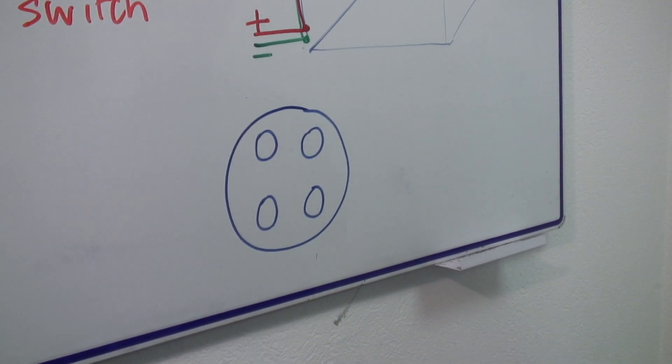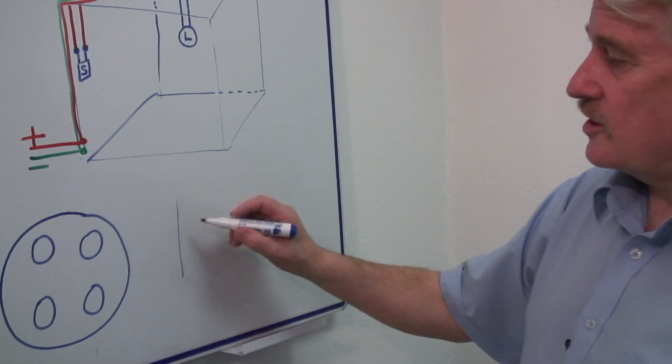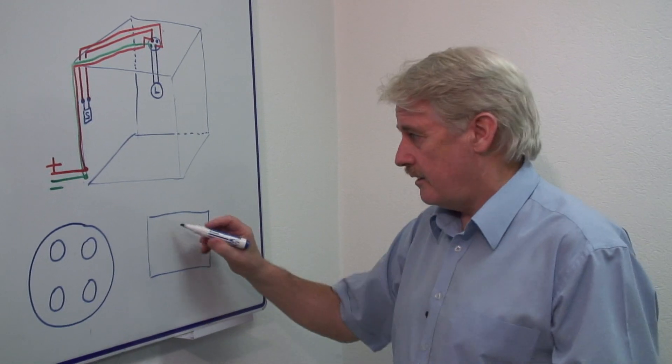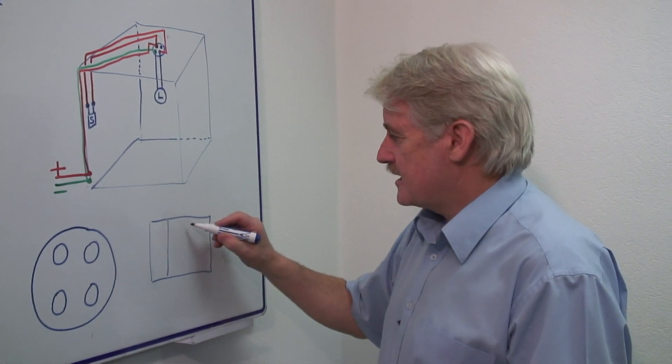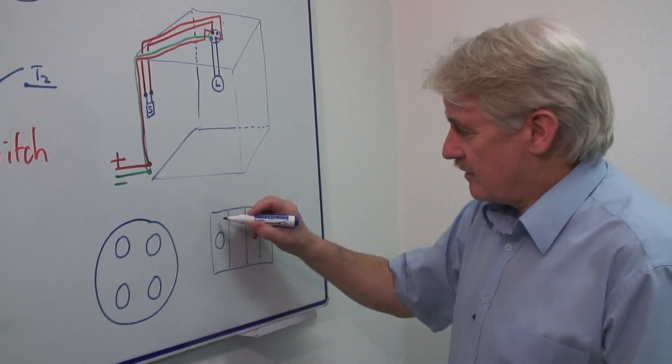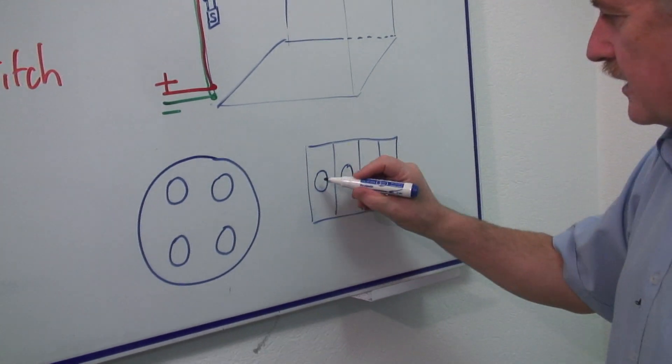In a little household circuit, you'd probably use what people sometimes call chocky bar, but basically it's connecting strip, which has a series of little connectors with screws in the middle.